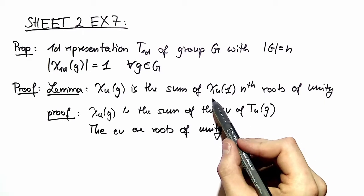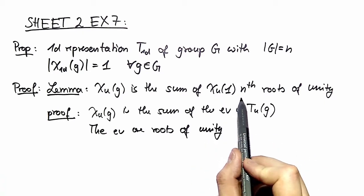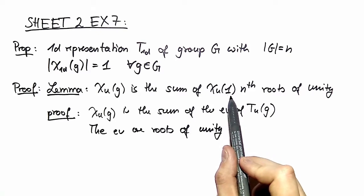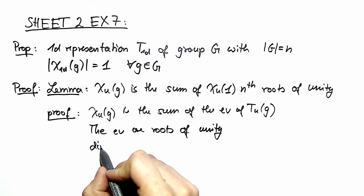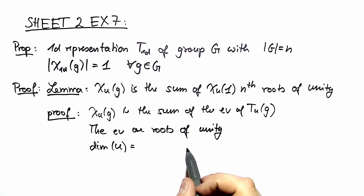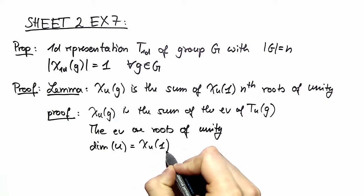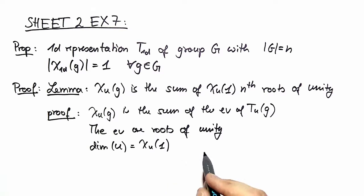The last part we need is what does it mean to have the character of the identity element. If you look at matrix representations then you realize that the dimension of our general representation is exactly equal to the character of our identity element. Because you have only ones in the diagonal and you have dimension of our representation times of them.